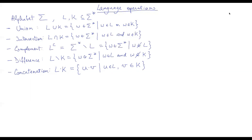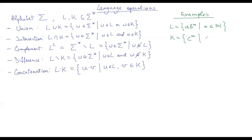As an example: if L is the language {a^n b^n : n ∈ ℕ} and K is the language {c^m : m ∈ ℕ}, then LK is simply all words of the form a^i b^j c^k with i, j, k natural numbers — that is, all possible combinations of a word from L followed by a word from K.